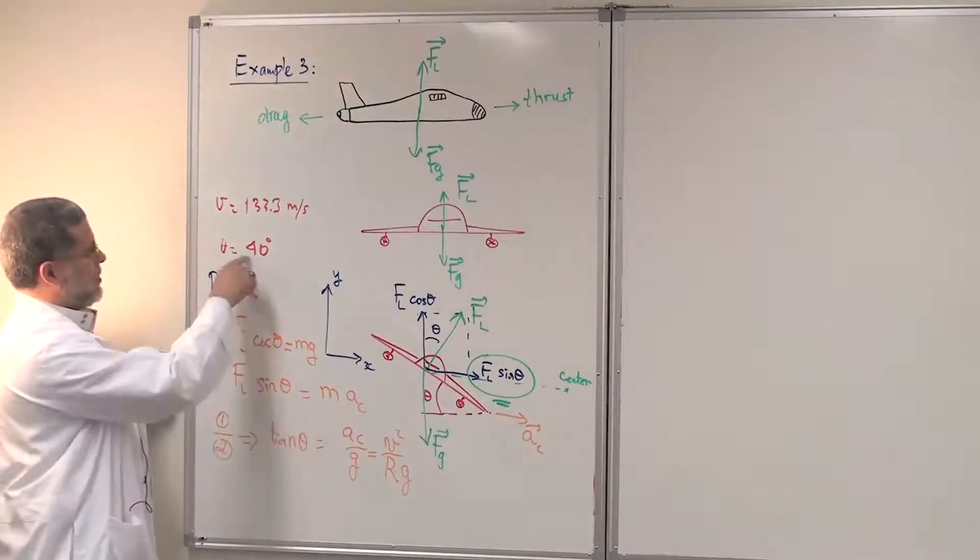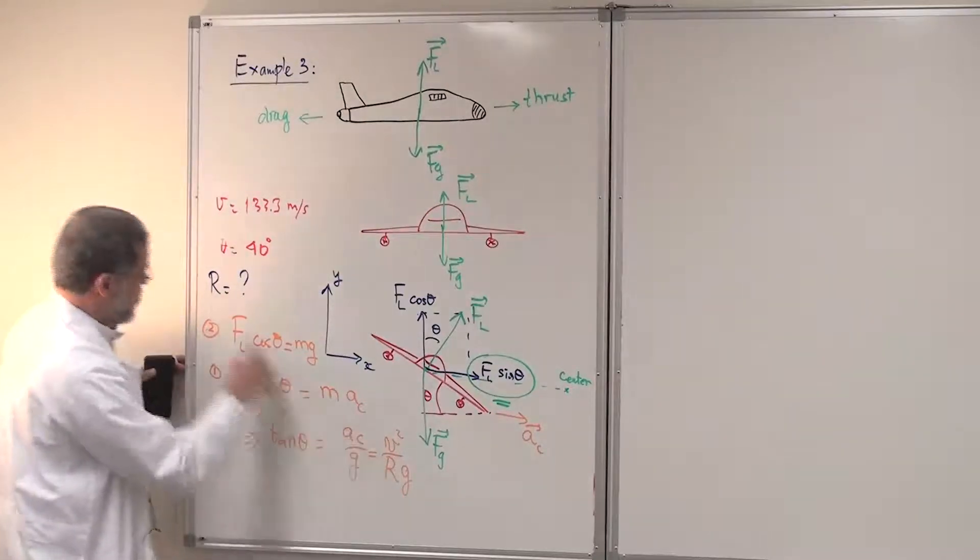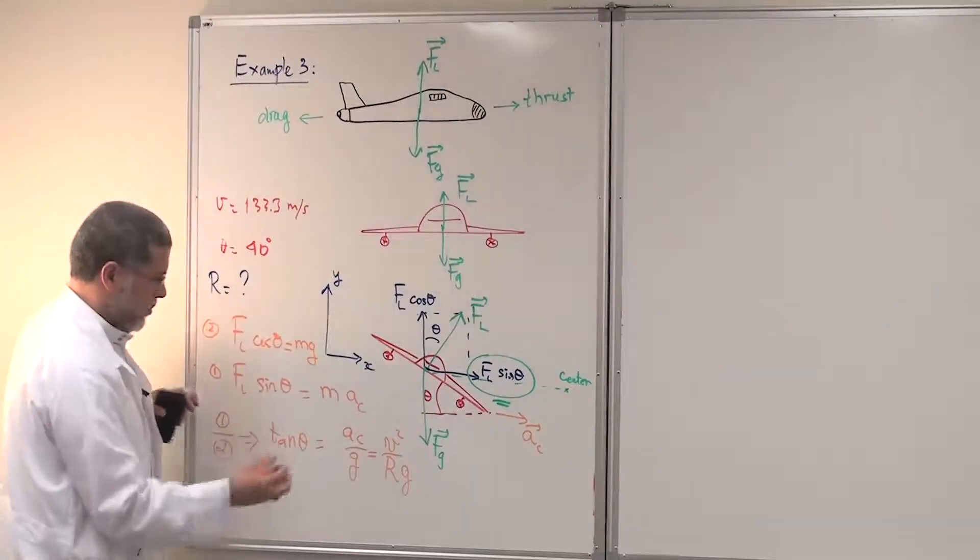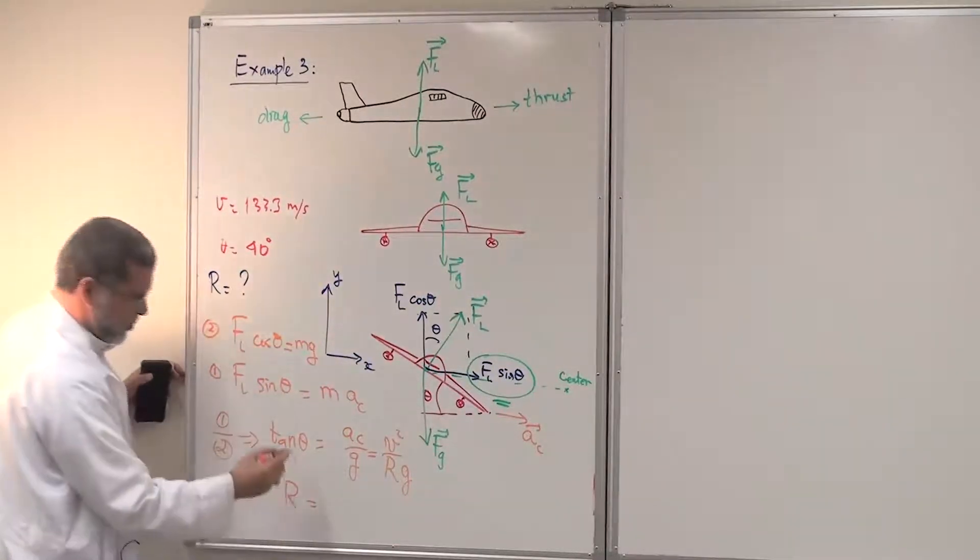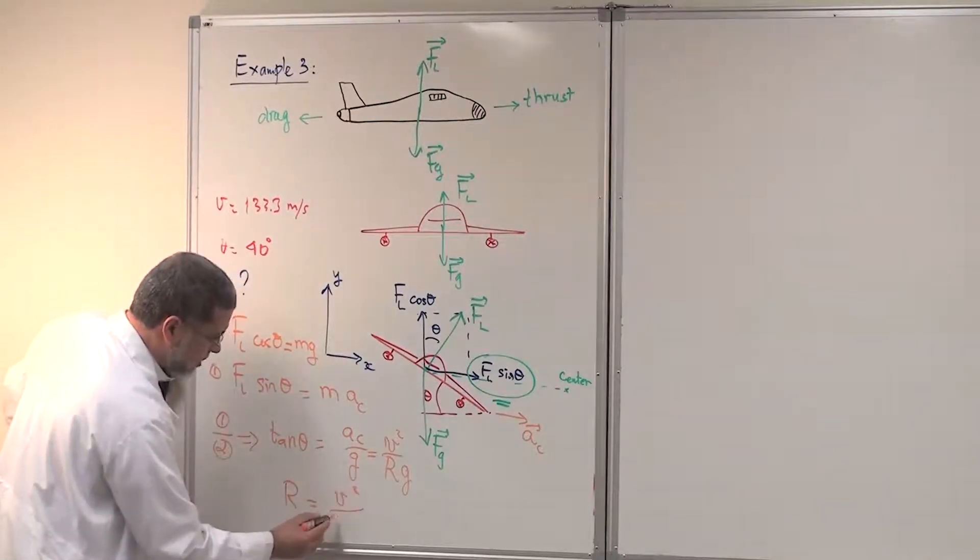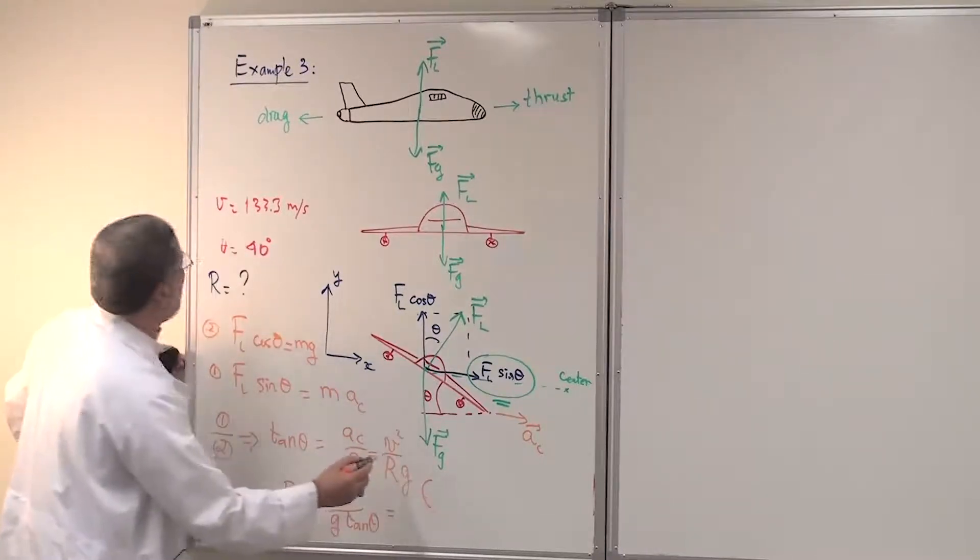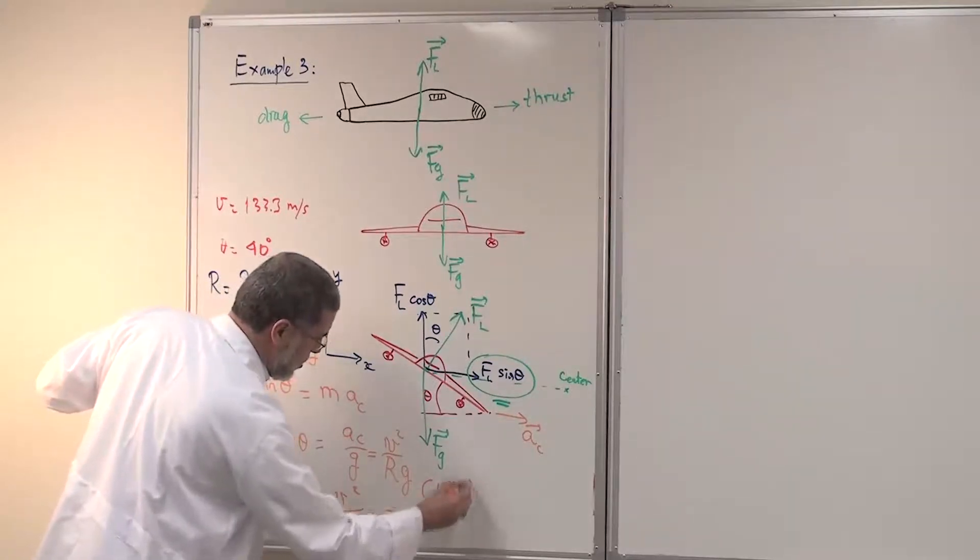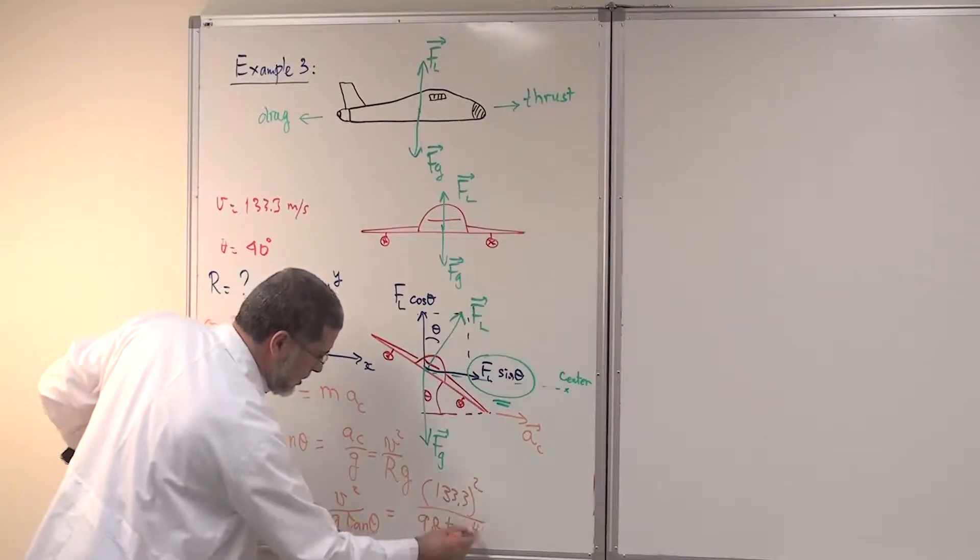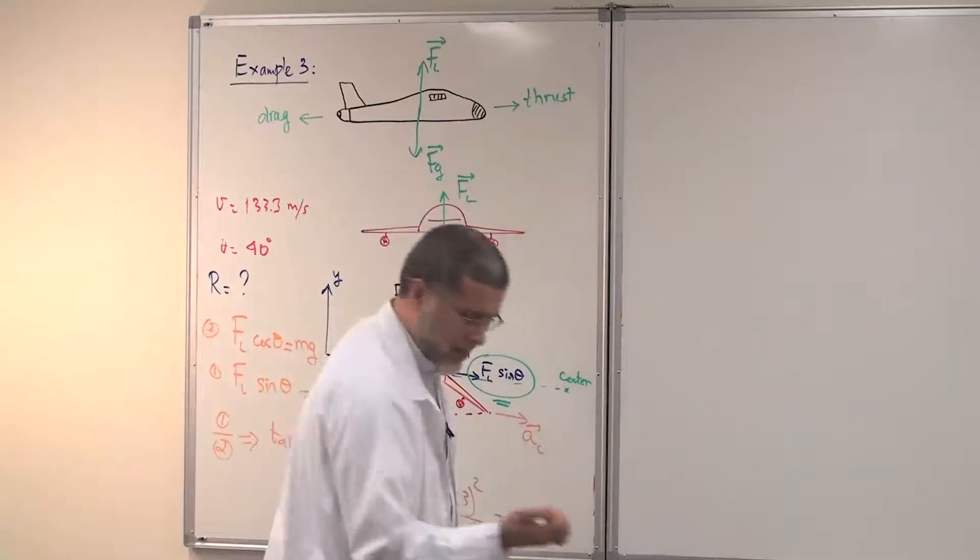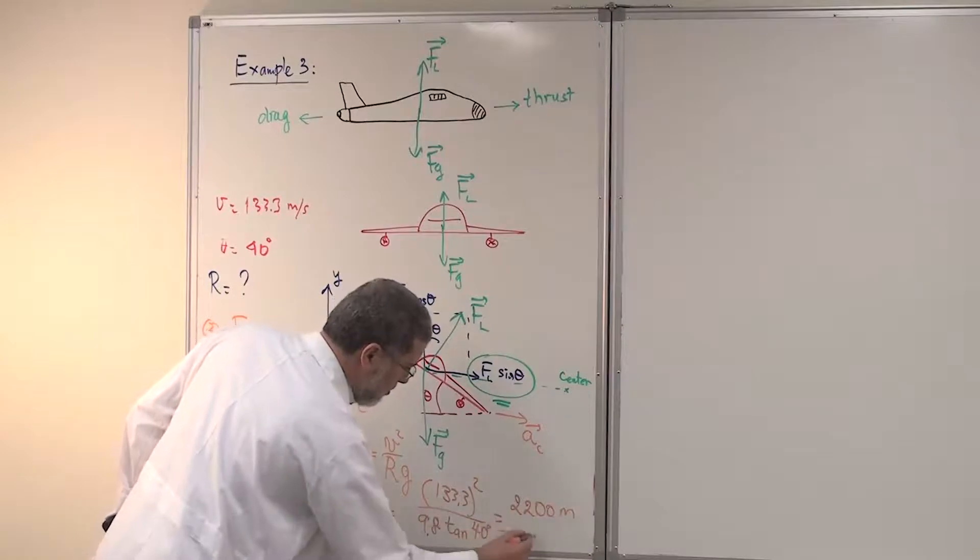Now, we know the angle theta here. We know V, it's here. And we know G, 9.8. So the question is to find the radius of this circular path. Of the airplane is going to move in a circle, circular path. So R in this problem will be V squared over G tan theta. Let's put the numbers there. 133.3 squared over 9.8 times tan 40 degrees. And this will give you an answer of 2,200 meters or 2.2 kilometers.